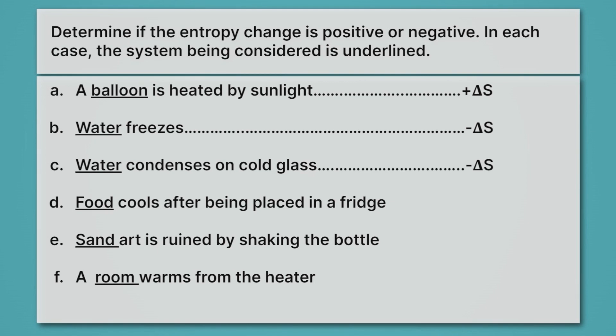D: food cools after being placed in a fridge. The temperature is decreasing, so our entropy is decreasing. E: sand art is ruined by shaking the bottle. Have you ever seen sand art? It's where you make those cool patterns in a glass bottle by layering sands of different colors. When you shake it, it's no longer nicely structured. So that's a positive change in entropy.